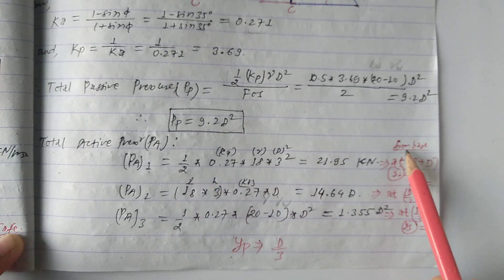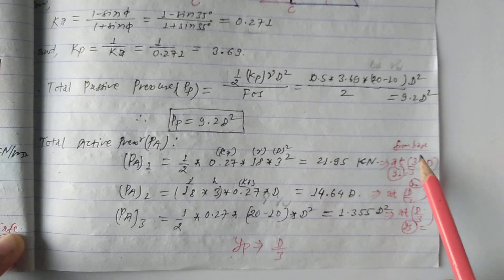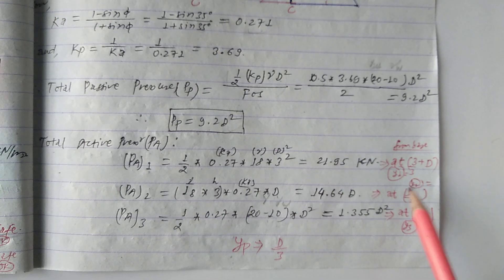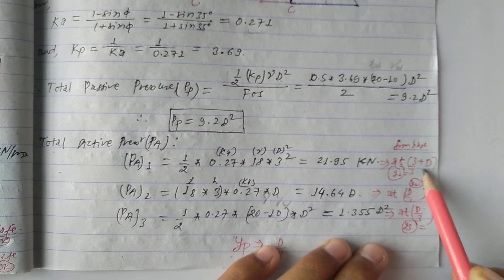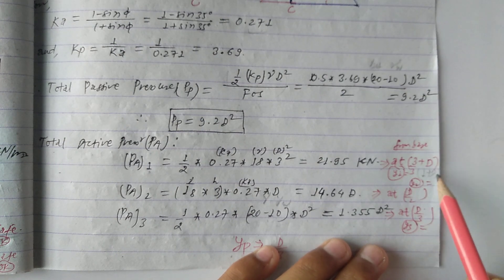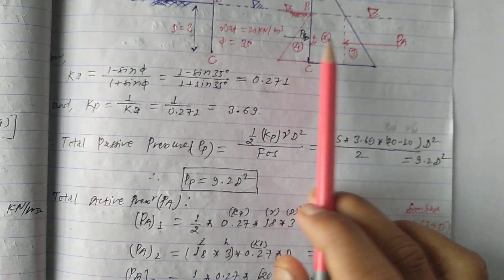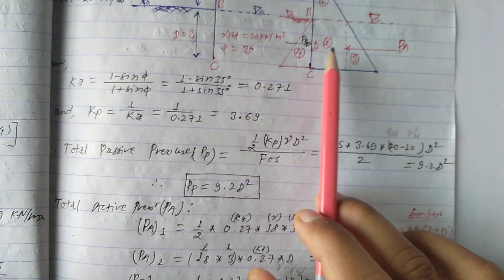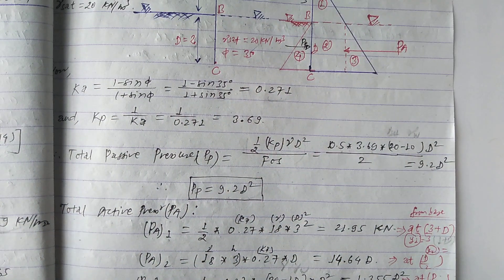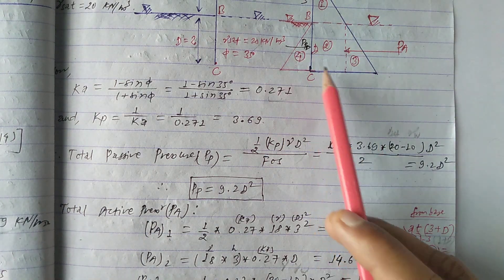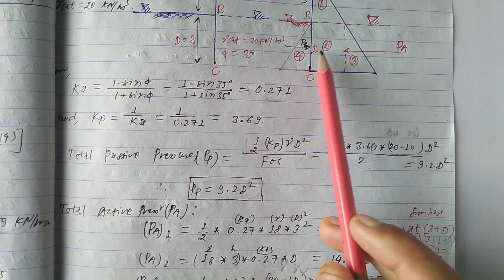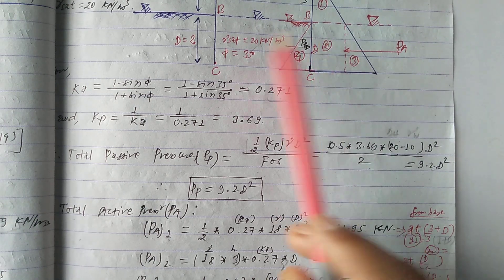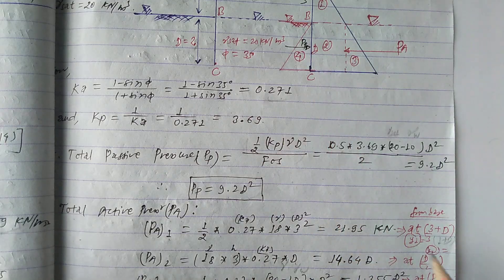The moment arm distances are: y = 3/3 = 1 for the upper portion, and (1 + d) for the combined distance. These are used for Pa1, Pa2, and Pa3 moment arms about point C at the base of the sheet pile.